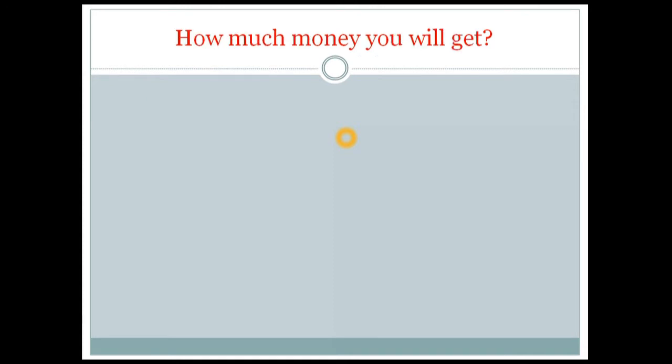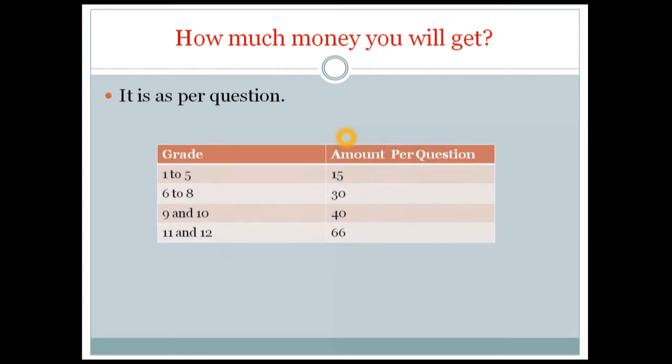How much money will you get? This is a very important question for which you will wait. It is as per question, like number of questions and which grade you are working on. So it is per question rate. The rate for 9th and 10th grade is Rs. 40 per question, and 11th and 12th is Rs. 66 per question. So how much money you will earn depends on number of questions. It is totally variable, it depends on how much time you can dedicate.